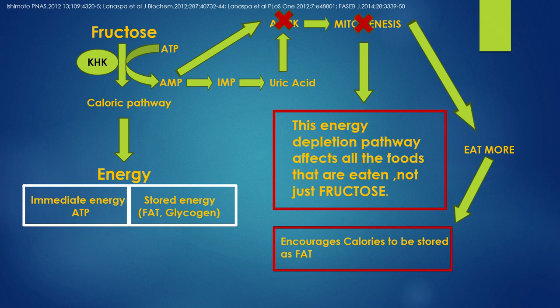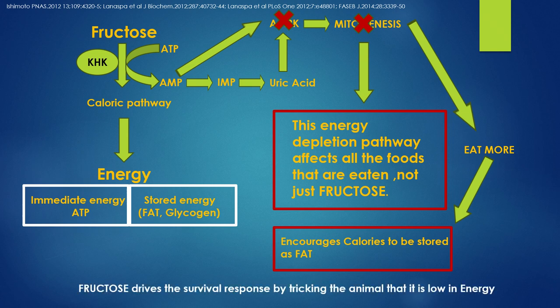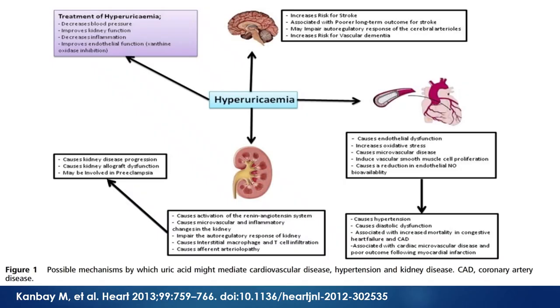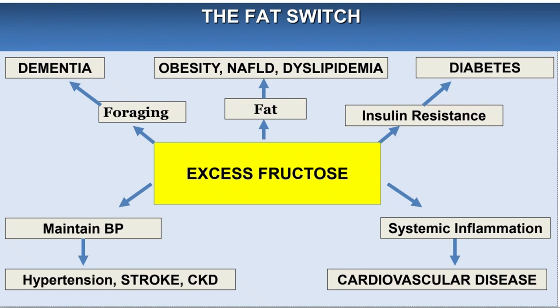And good thing for the bear — they hibernate. However, we don't. This fructose drives a survival response by tricking the animal into thinking it's low in energy so that it will gain weight. So in the depth of winter, they have energy and can hibernate safely without dying. Uric acid is a double-edged sword: it causes hypertension, heart disease, gout, hypertension, CKD, strokes, and dementia. So you'll notice that the fat switch is fructose.